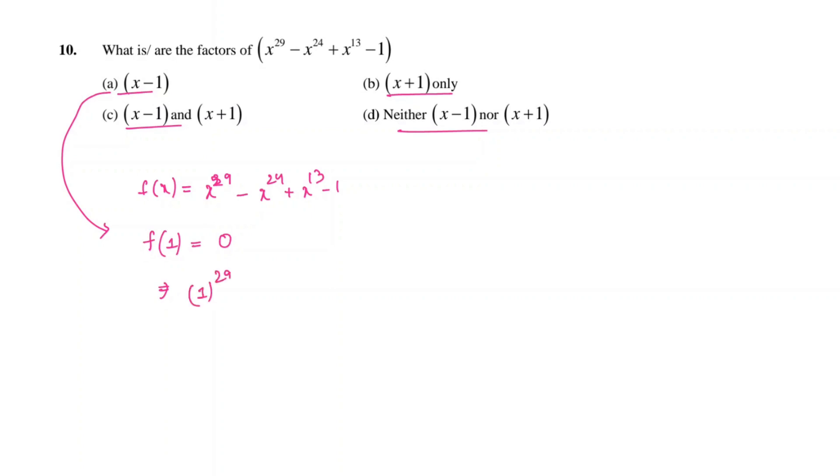1 power 29 minus 1 power 24 plus 1 power 13 minus 1. This is 1 minus 1 plus 1 and minus 1. All the terms get cancelled and yes, the value of this expression is equal to 0. Hence, we can say that x minus 1 is a factor of this given expression.